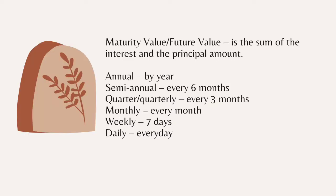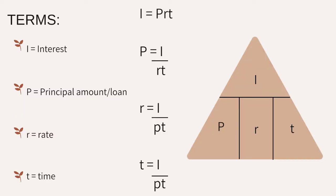Maturity value or future value is the sum of the interest and the principal amount. Time periods include: annual by year, semi-annual every 6 months, quarterly every 3 months, monthly every month, weekly every 7 days, and daily every day. These are the terms and formulas we can use in problem solving. Which formula to use depends on the given problem.